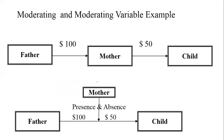Suppose there is a father who is the earning source in the family. He gives some pocket money to the mother, and then the mother out of this $100 gives some money to the child. In this case, the mother is acting as a mediator because she is being given money by the father and then passes it along to the child.